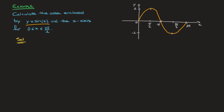The area we wish to calculate is enclosed by this curve and the x-axis for x-values between 0 and 3 pi over 2. To get a visual on that, I'll shade that area — the part above the x-axis, as well as the first half of the area underneath the x-axis. This shaded area is what we need to calculate.